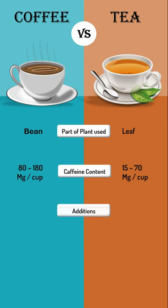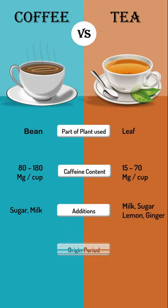The third point is additions. We can add milk, sugar, lemon, and ginger to tea. We can add milk and sugar to coffee.